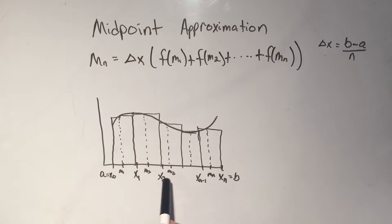and then it would go x1, x2, x3, all the way up to xn. And the thing that we're picking is the middle value between all of these subintervals.